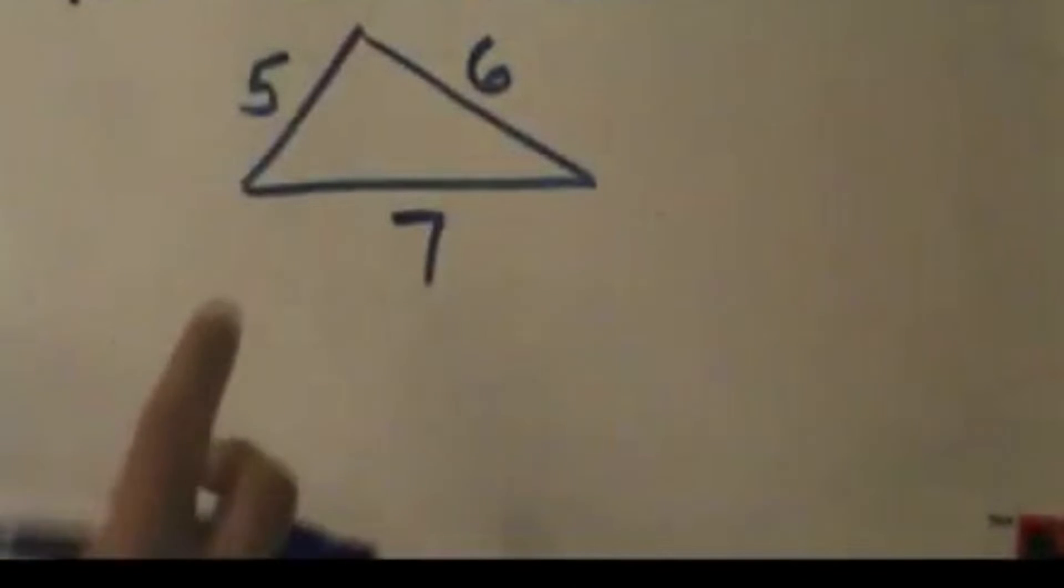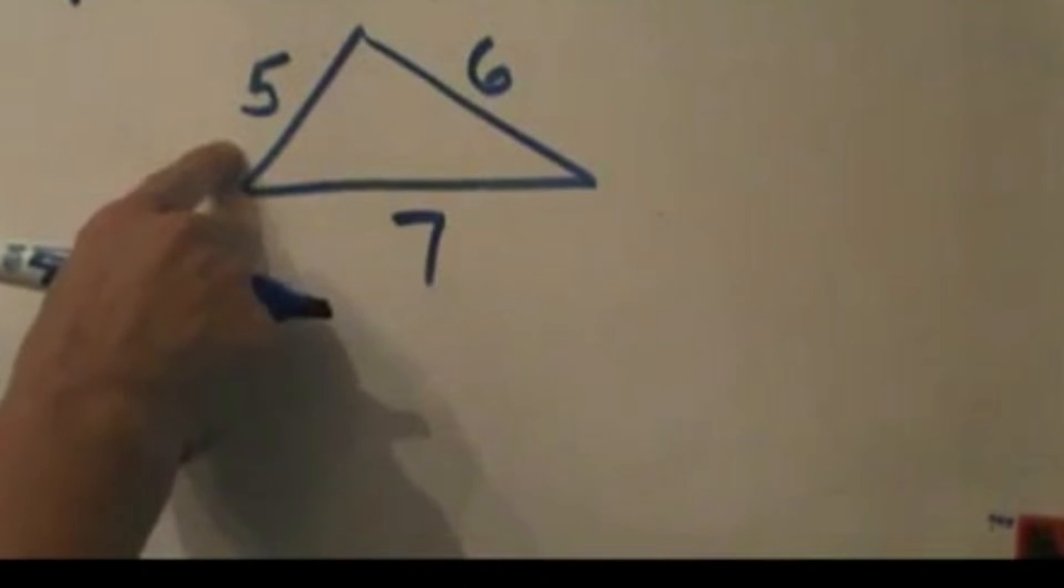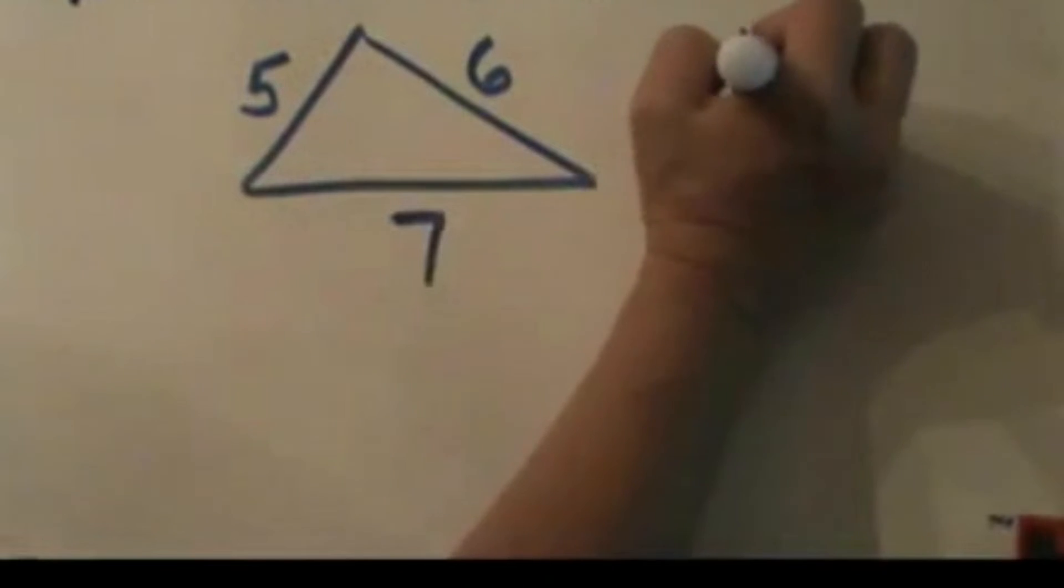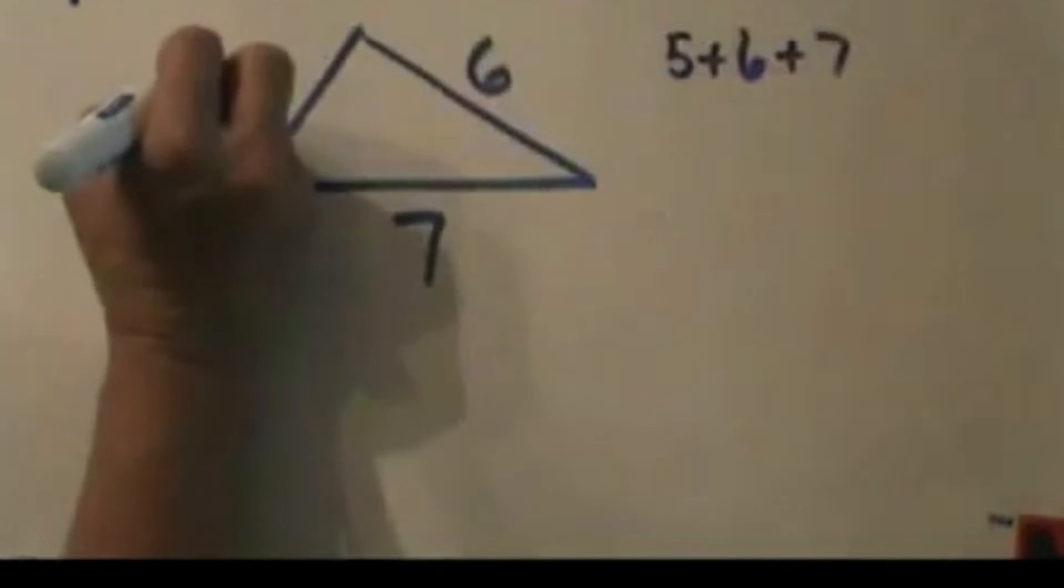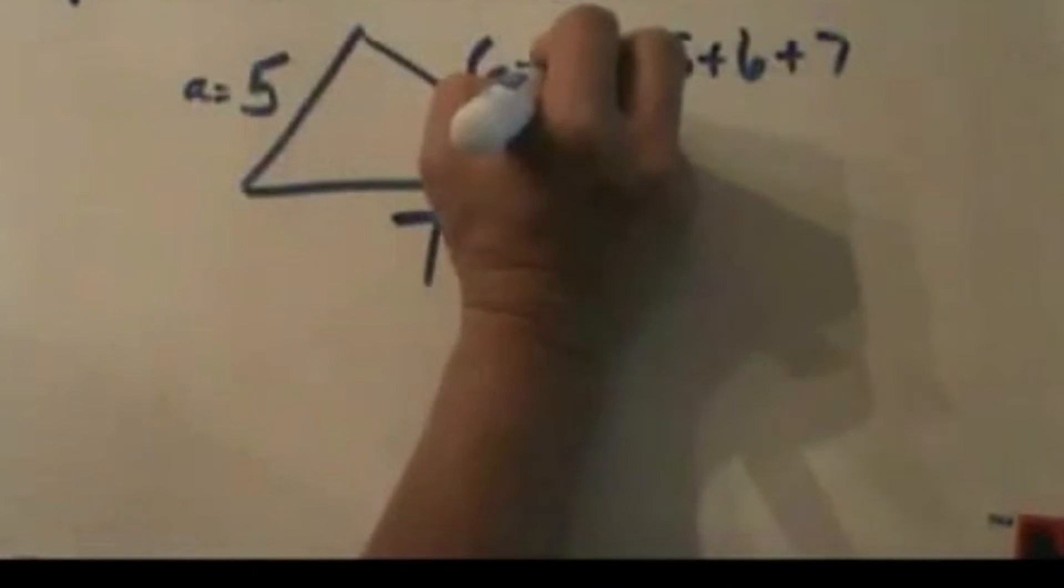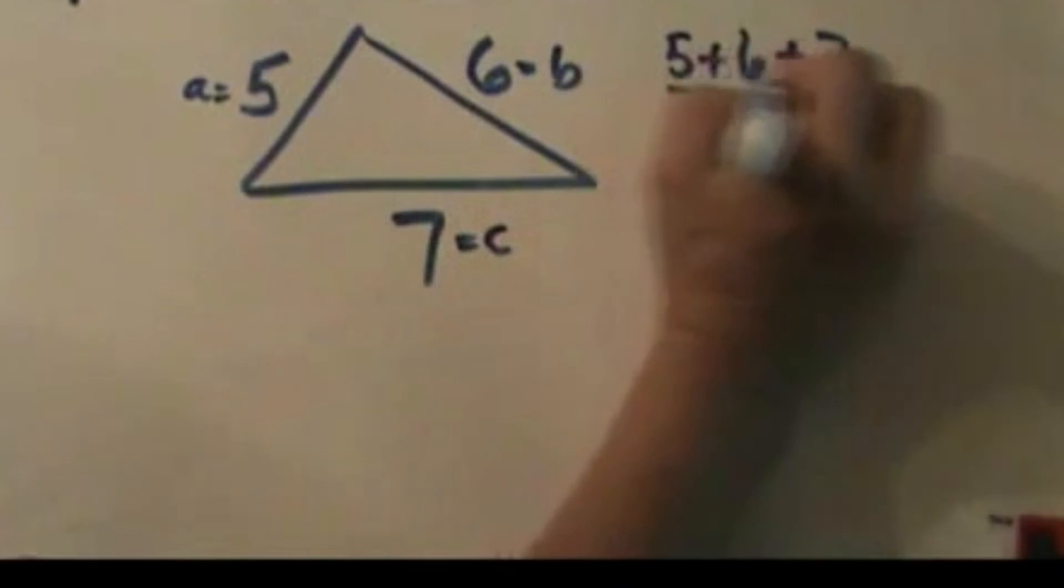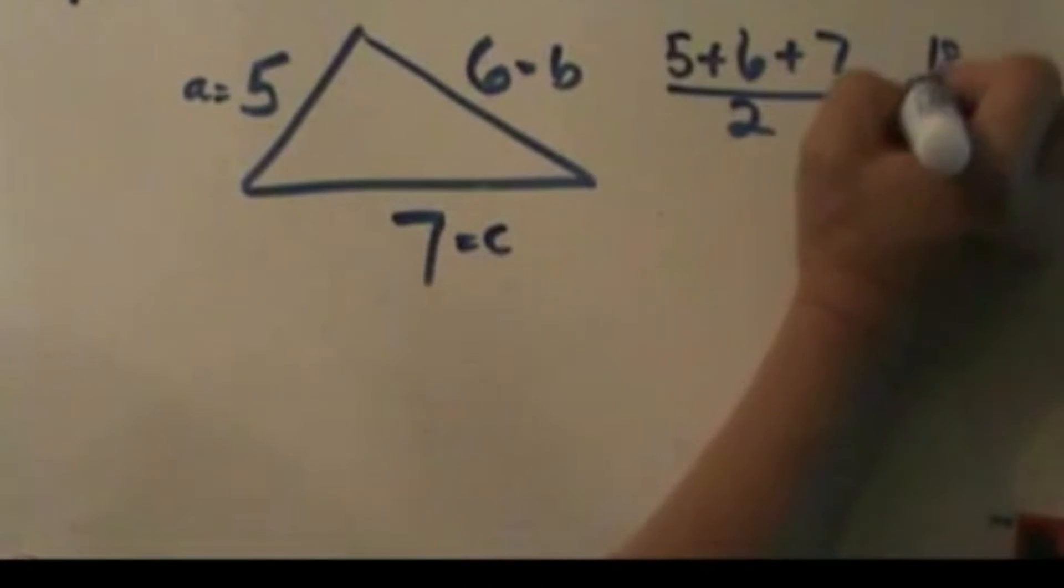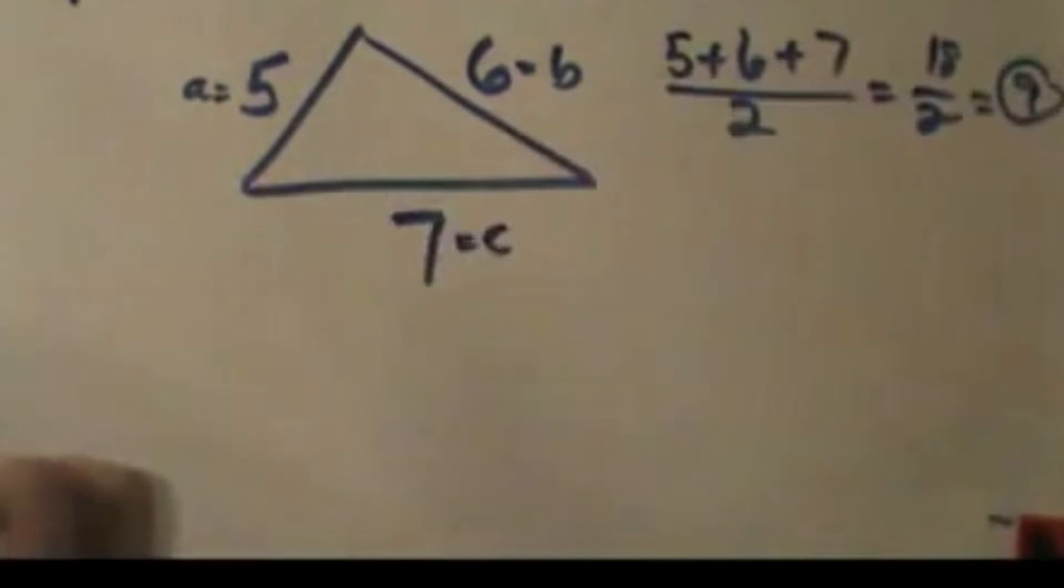So let's work this one out. The first step is to find S. So I have to take A plus B plus C, and I'm just going to call 5 A, 6 B, and 7 C. I'm going to add those up and divide by two. When I add those up, I get 18. 18 divided by two is 9. So 9 is my magic S.